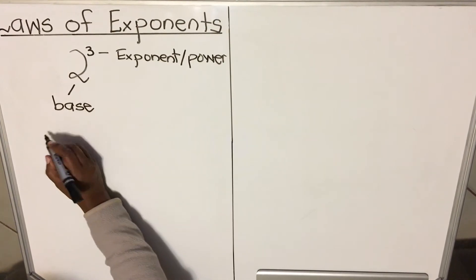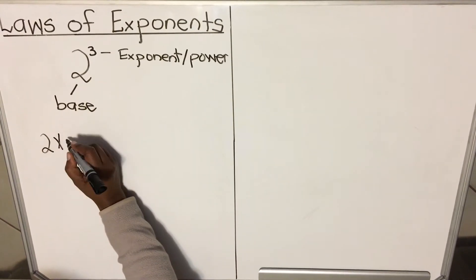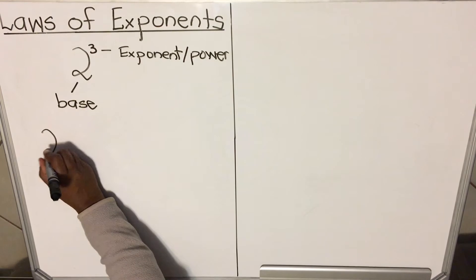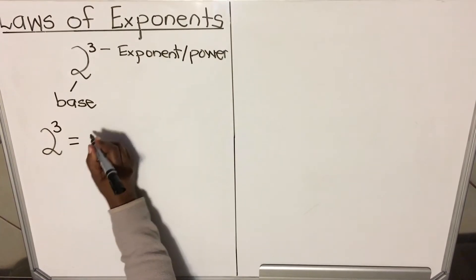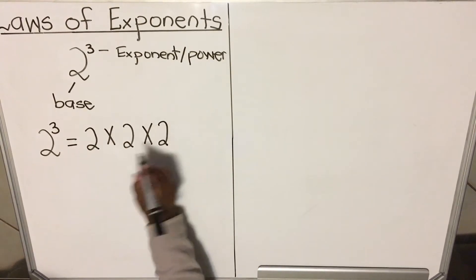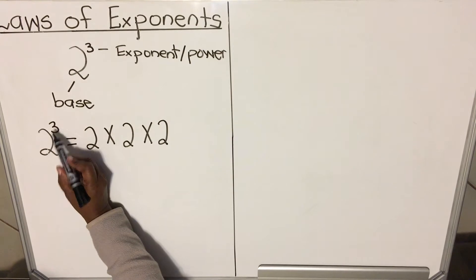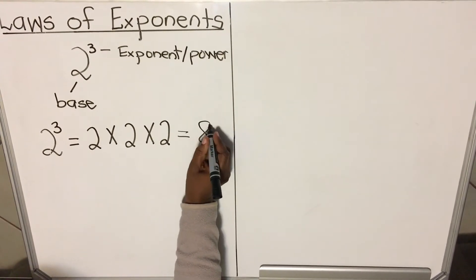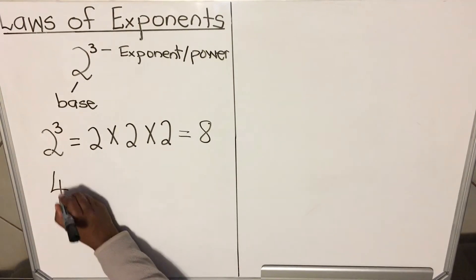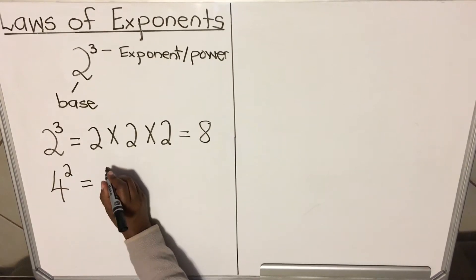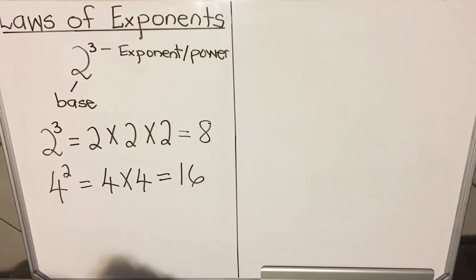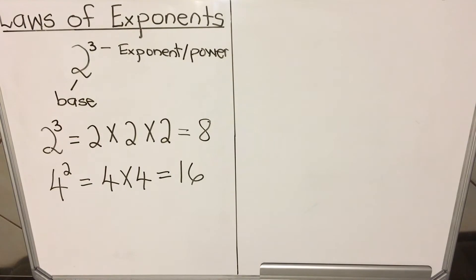Two to the power three, or two to exponent three, means you multiply two three times. You multiply the base as many times as the exponent, and your answer is eight. That is what an exponent means. Let's look at another example: four to the power two means you multiply four twice, which is 16. It is not four times two.